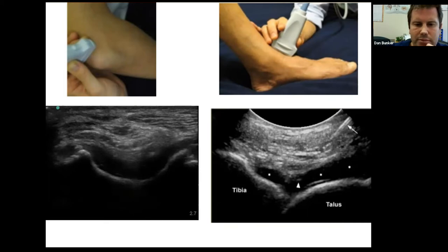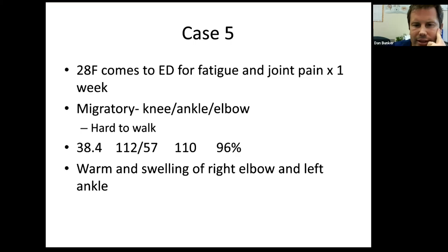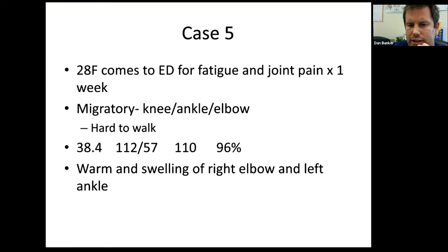Let's think about the differential. Endocarditis stays on the differential, though it would be unusual to cause large effusions from immune complex–mediated migratory arthralgias. Polyarticular septic arthritis is a consideration — doing blood cultures and aspirating would be very important. Disseminated gonococcal infection would be on the differential. Serum sickness is also possible. Any other ideas?